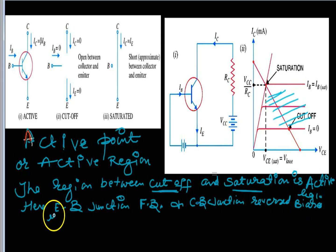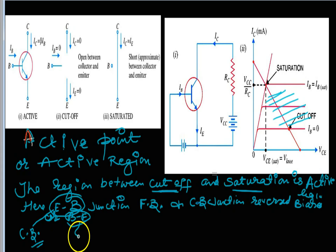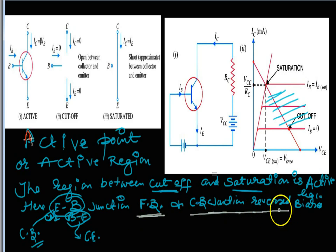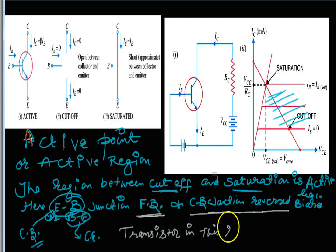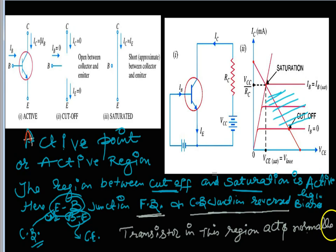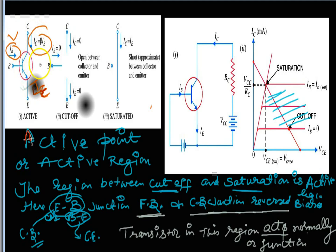For amplifying the signal, the transistor must remain in the active region. The emitter-base junction is forward biased and the collector-base junction is reverse biased. When we say base-emitter it is the common emitter configuration, and when we say emitter-base it is the common base configuration.